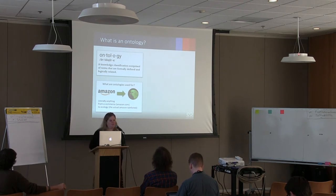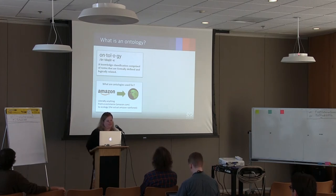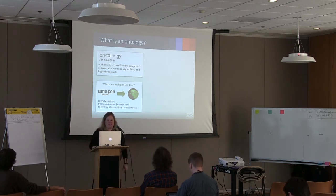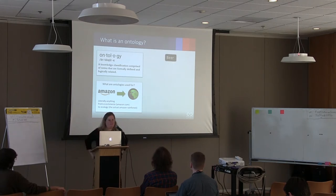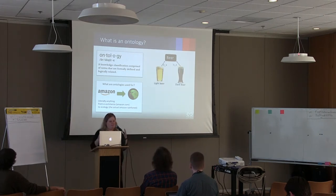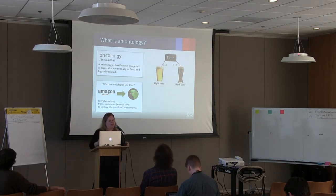What are ontologies? An ontology can be defined as a knowledge classification comprised of terms that are formally defined and logically related. To give you an example, say we are going to create an ontology around a particular domain or knowledge base. Let's use the example with beer. If we had an ontology of beer, beer would be our upper level class, and then we would have subtypes of beer. Ontologies use a subclass classification where a light beer is a type of beer or a dark beer is a type of beer.